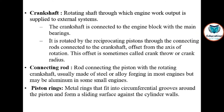The crankshaft is the rotating shaft through which engine work output is supplied to external systems. The crankshaft is connected to the engine block with the main bearings and is rotated by the reciprocating pistons through the connecting rods connected to the crankshaft offset from the axis of rotation. This offset is sometimes called the crank throw or crank radius.